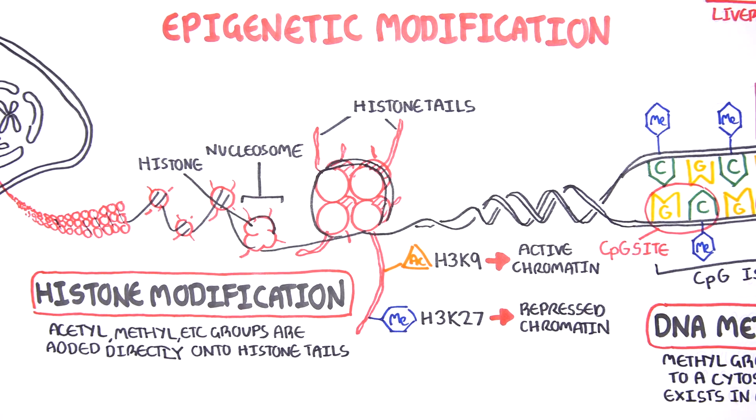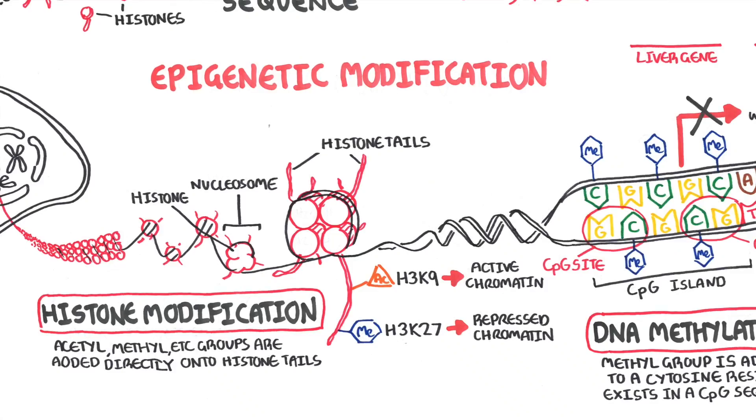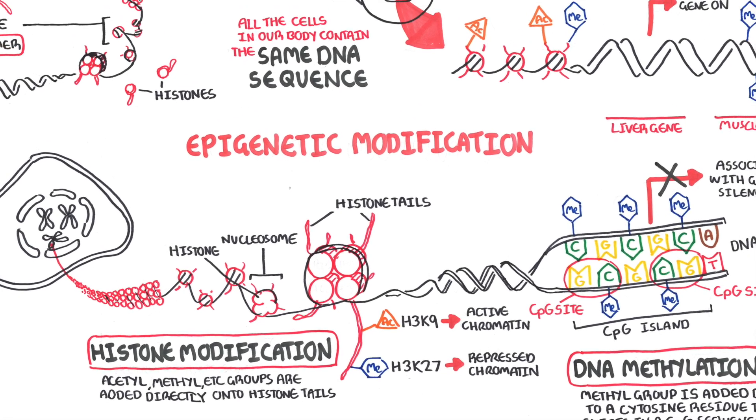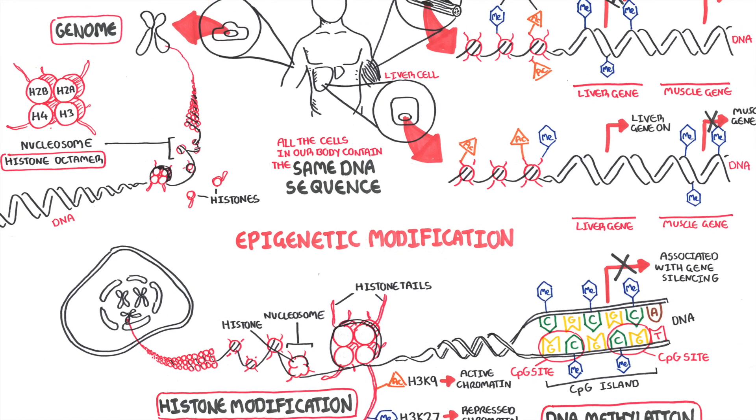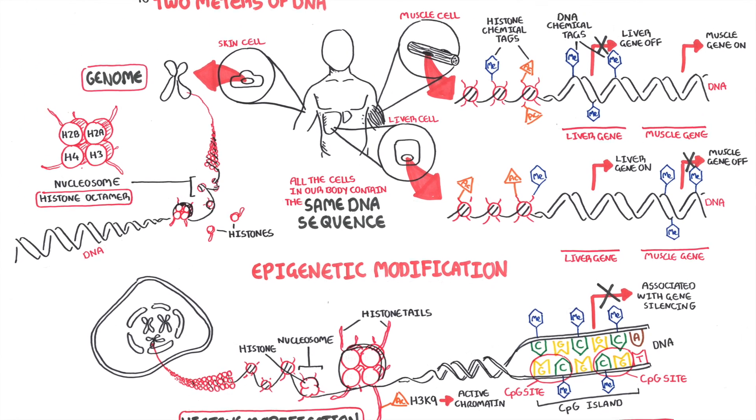Genome-wide patterns of DNA and histone modifications, or epigenome, are established during early development and are maintained during cell division. In cancer, these patterns are altered and disrupted.